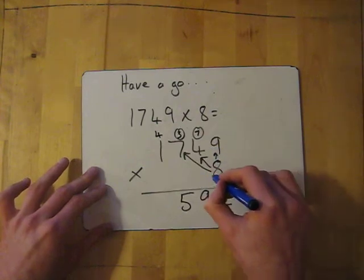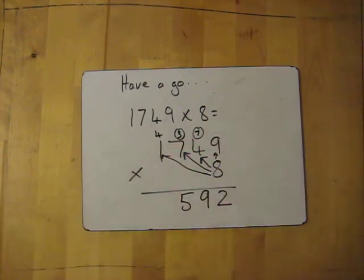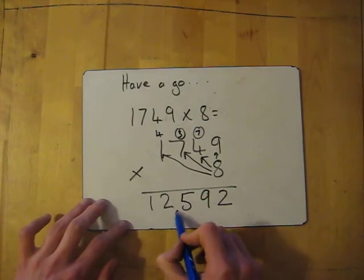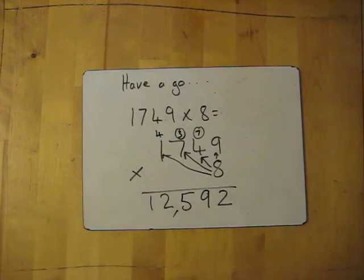And then put down the 4. And then finally life 1 killing the last number. 8 times 1 is 8. Then add the 4. Gives me 12. Nothing else to carry on to. So just write down the 12. So it's 12,592. Alright. Thanks.